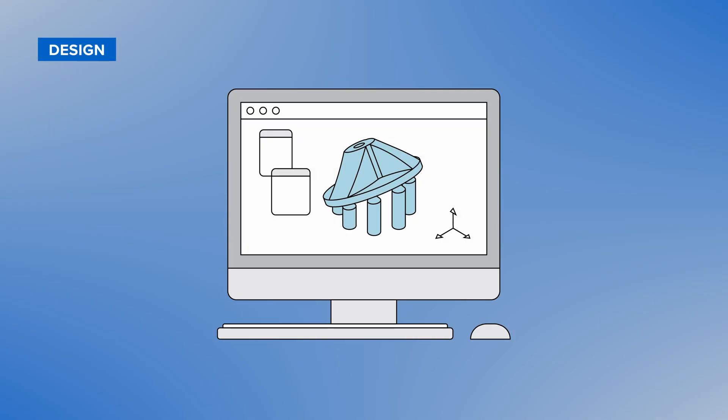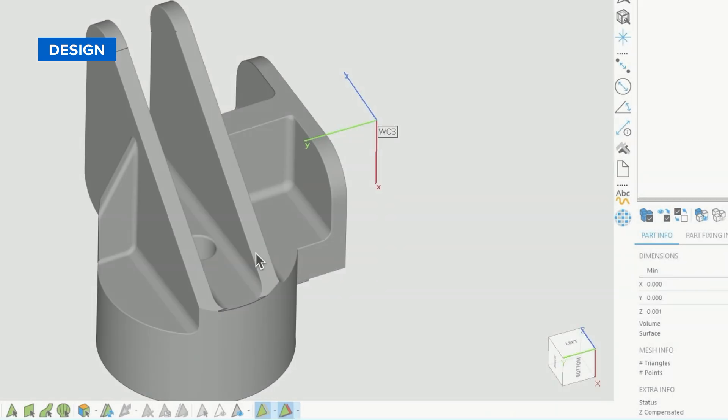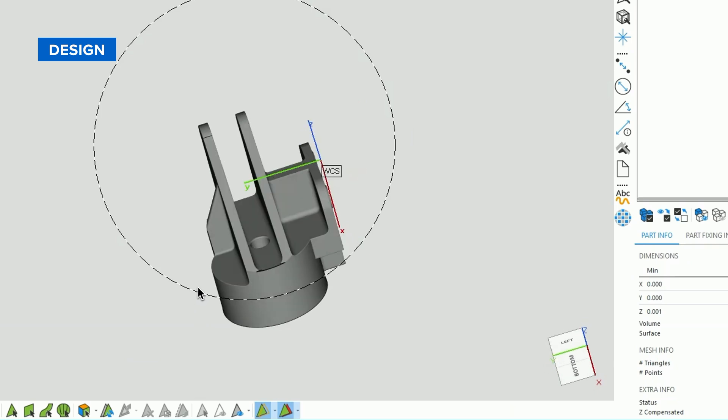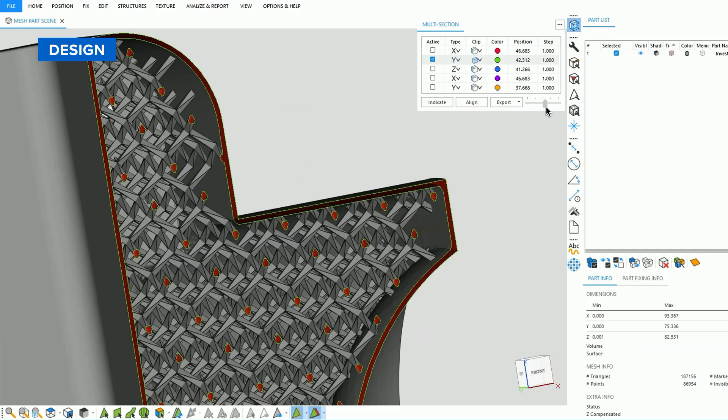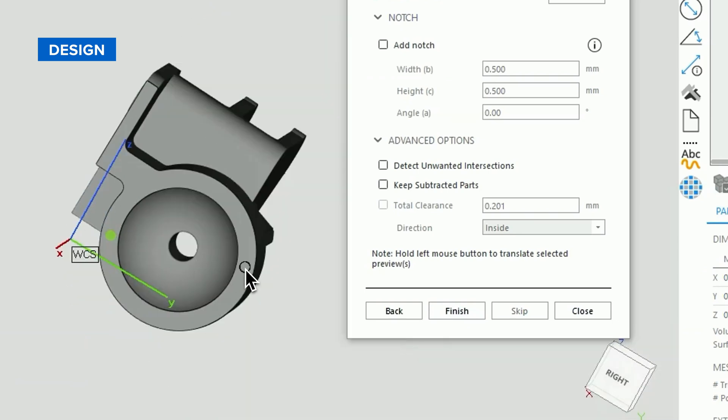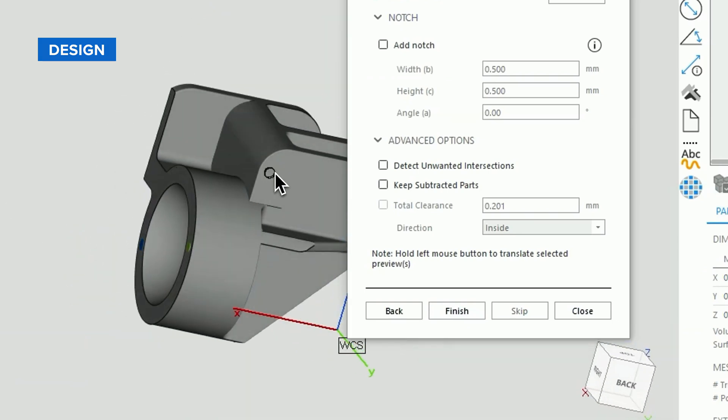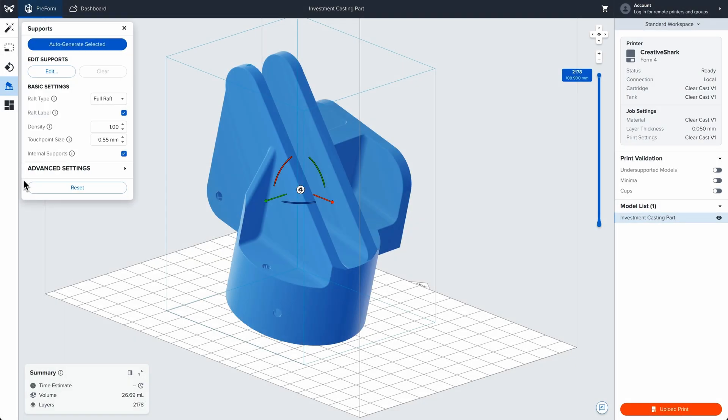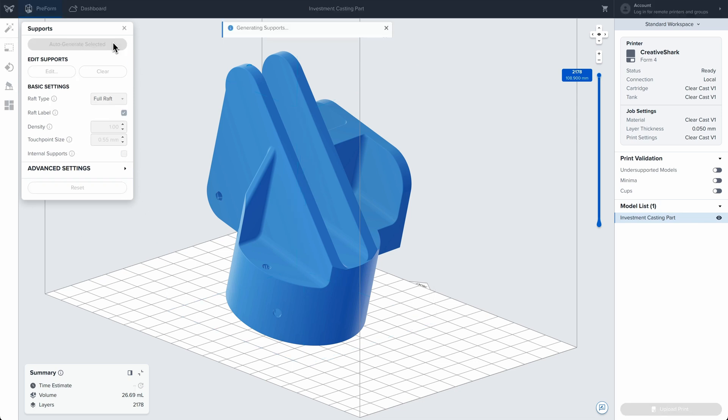First, design the part the same way as with wax. That model can then be taken into a latticing software like Materialize Magix where an internal lattice is generated and drain holes are added to ensure optimal printing, cleaning, and pattern burnout. Then it can be taken into Preform and printed.